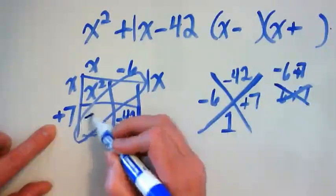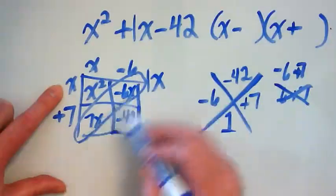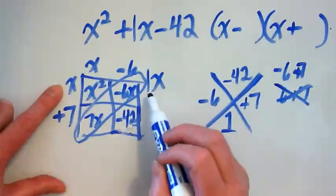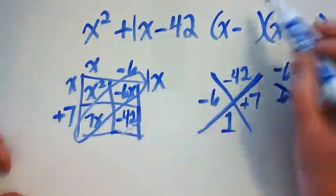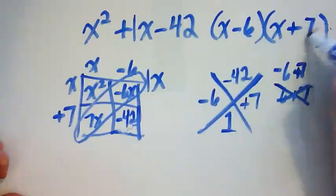X times seven would get me seven x. Negative six times x would give me negative six x. When I combine those like terms, do I get a positive one x? And I do. So that means that the answer to this is negative six, positive seven.